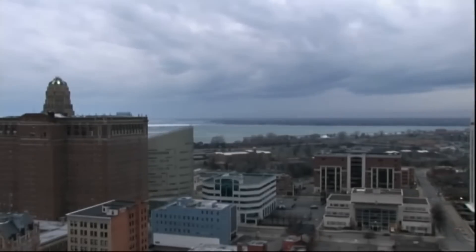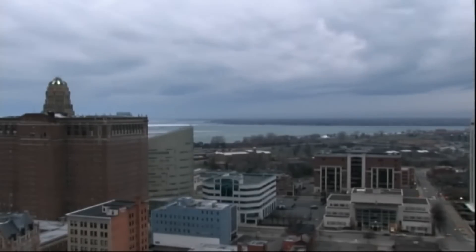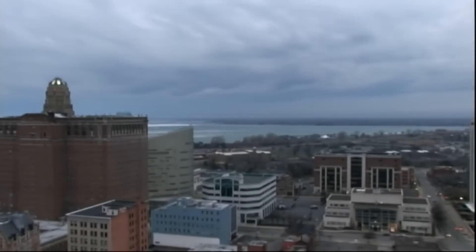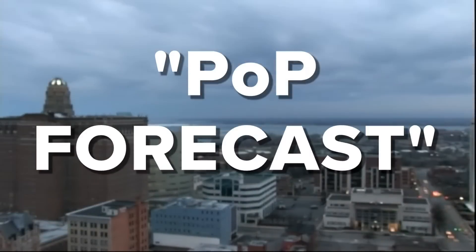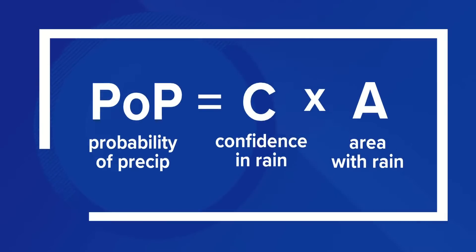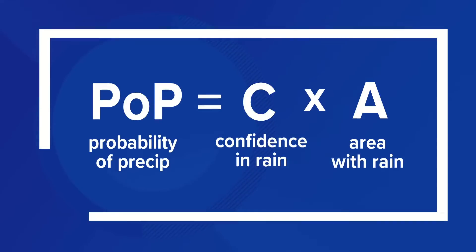A true probability of precipitation, or POP forecast, is this: the confidence that we have that rain will occur within our forecast area, multiplied by the percent of the region that we'll see precipitation, if it rains at all.